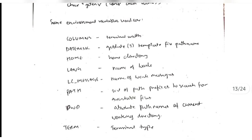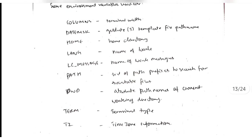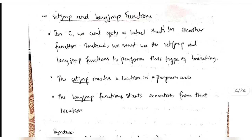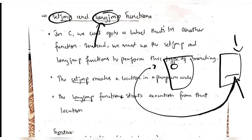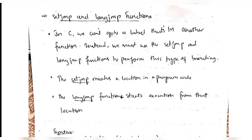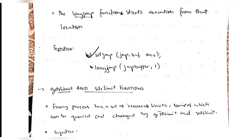Some examples of environment variable commands are used to get the columns, date, home, language, and so on. Sometimes we need to go from one program to another program - we can't directly go, we need a label. For that we use 'setjmp' and 'longjmp' functions. Wherever we want to go we mark that point with setjmp. If we are at some other location, longjmp will take us from the current location to the point where setjmp is specified, and execution will start from there.